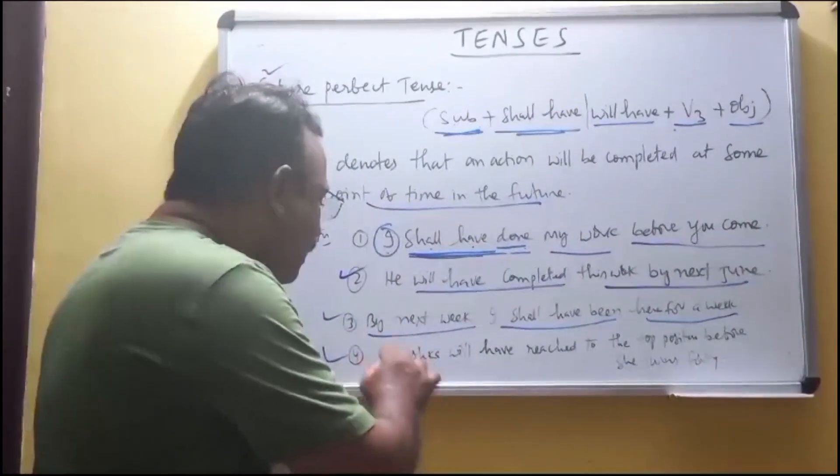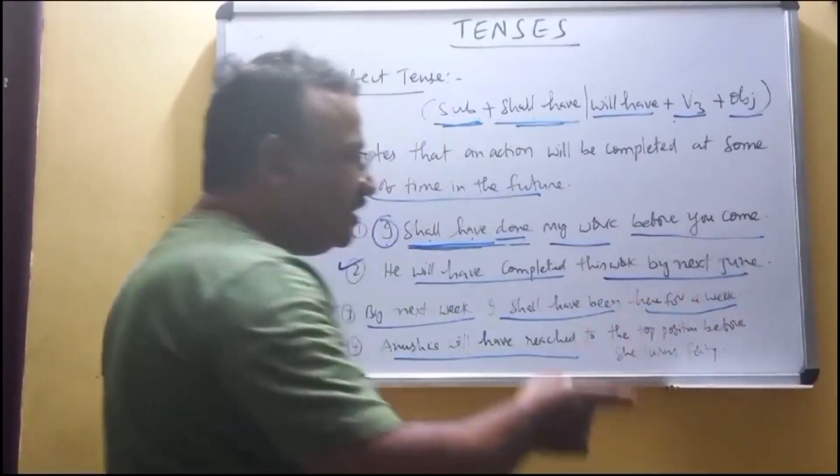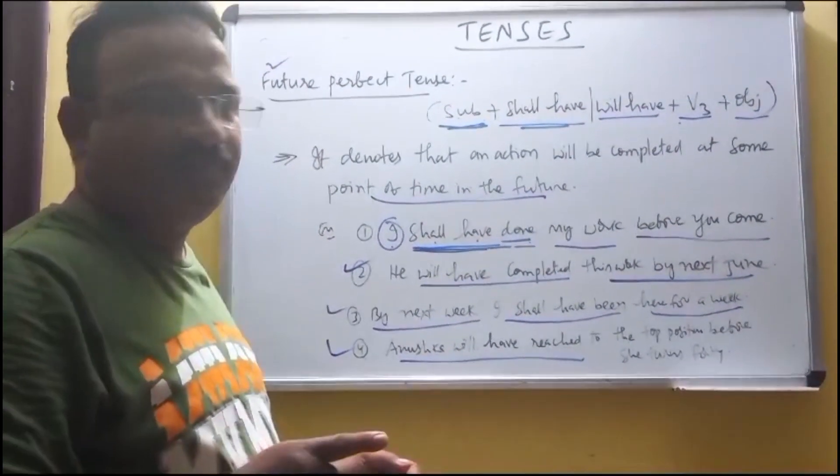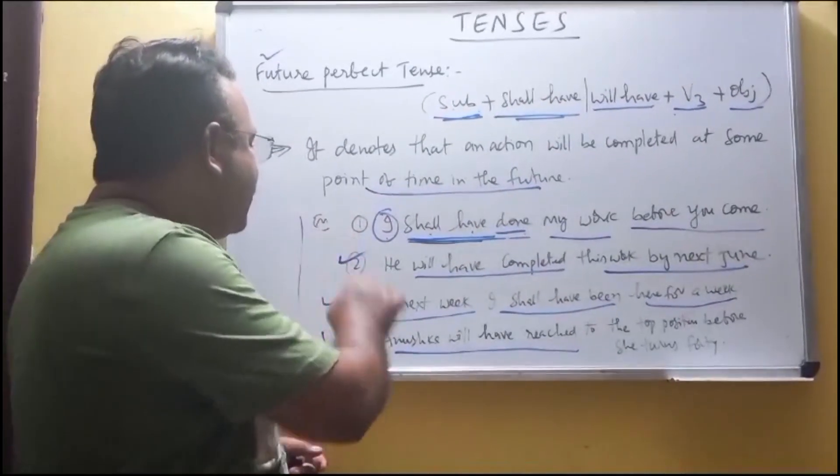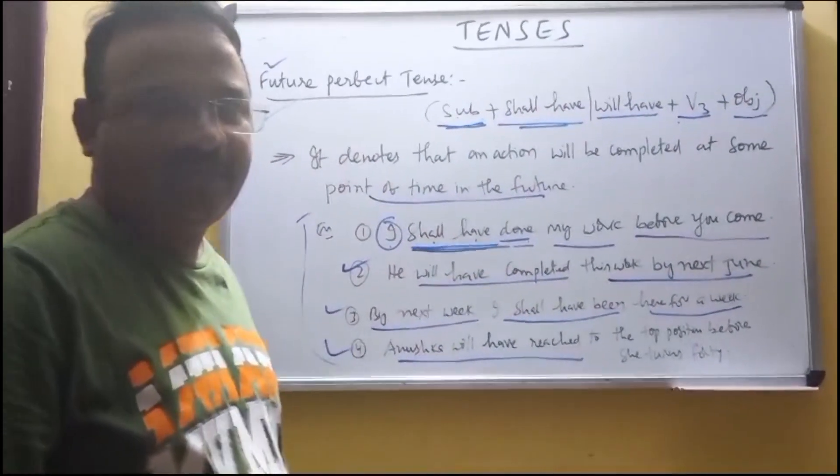And one more. Anushka will have reached to the top position before she turns thirty. These are the best examples for future perfect tense. Thank you.